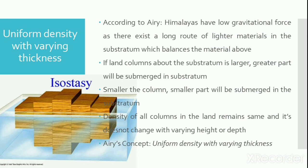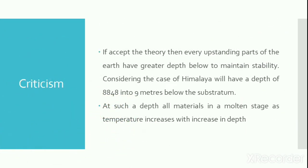According to Airy, the Himalayas have a lower attractional force because there exists a longer root of lighter material in the substratum, which balances the material above. Airy postulated that if the land column above the substratum is larger, a greater part will be submerged in the substratum. Similarly, a smaller land column will have a smaller part submerged. Thus the density of different columns remains the same and does not change with varying height or depth. This explains uniform density with varying thickness — so even though the earth has different relief features, the density will always remain the same.